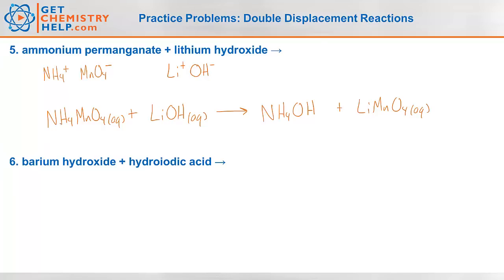Now let's balance it. One ammonium on the reactants, one on the products. One permanganate on each side. One lithium on each side. One hydroxide on each side. So it is balanced. Now we can replace NH₄OH with ammonia gas dissolved in water. The order on the product side doesn't matter. Notice this is still balanced because ammonium hydroxide has the same number of nitrogens, hydrogens, and oxygens as ammonia and water do.